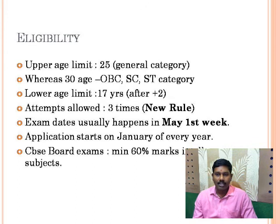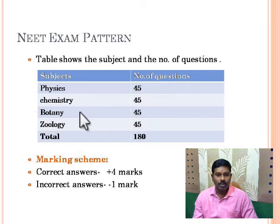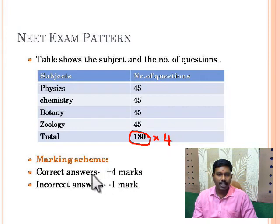Now we will see the marking pattern and how many questions are asked in the NEET exam. Physics has 45 questions and Chemistry has 45 questions, totalling 90 questions. Biology has 90 questions — Botany 45 and Zoology 45. So totally 180 questions. If you answer all 180 questions correctly, the total score will be 720 marks — that is 180 multiplied by 4.